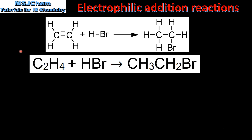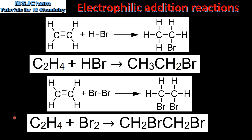Finally, we'll have a look at the equations for the reactions. Here we have the reaction of ethene with hydrogen bromide to form bromoethane, and here we have the reaction of ethene with bromine to form 1,2-dibromoethane.